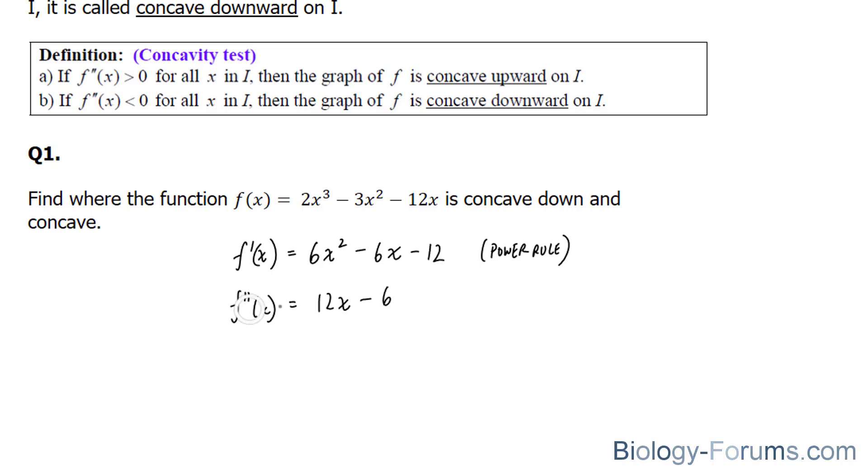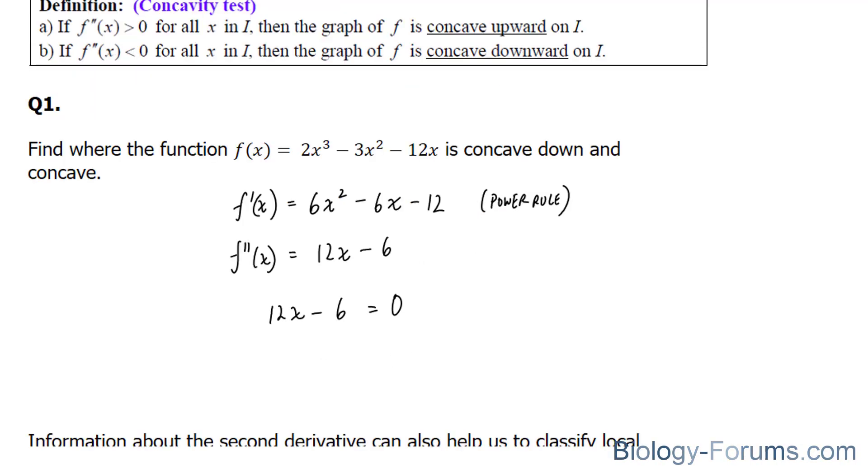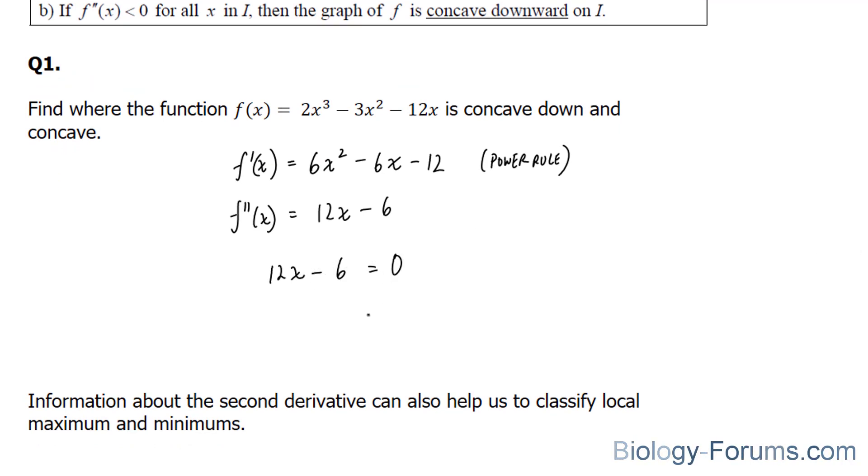So the next thing I'll do is set this equal to zero. 12x minus 6 is equal to zero. And here I'll find the critical point. I'll bring this 6 over, giving us positive 6, 12x. And therefore, x is equal to half.